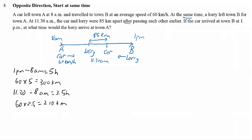That means the distance from A to here is 210 km. We also know that the total distance is 300 km. So the remaining distance here will be 300 minus 210, which equals 90 km. This is the remaining distance from the car's position to Town B.